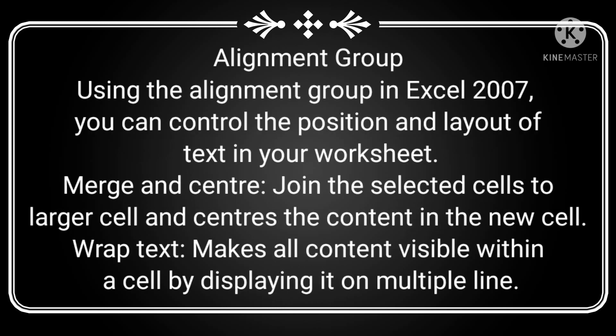The next group is the alignment group. Using the alignment group in Excel 2007, you can control the position and layout of text in your worksheet. The next feature is Merge and Center, which joins selected cells into larger cells and centers the content in the new cell.